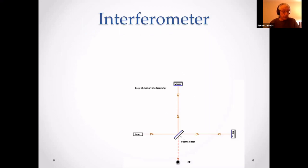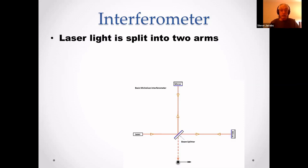Detectors measure gravitational waves by using an interferometer. This diagram shows a basic Michelson interferometer — LIGO is not basic in any way. Laser light is split into two arms by a beam splitter, a half-reflective mirror at 45 degrees.